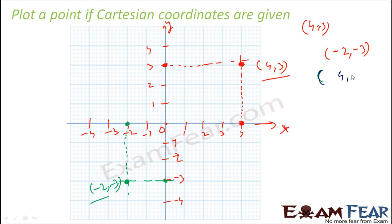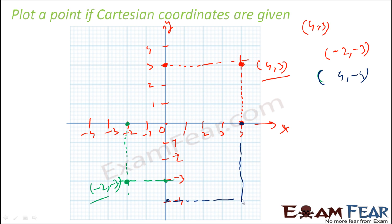Now let's plot 4 comma minus 1. We place 4 on the x-axis and minus 1 on the y-axis. Drawing the perpendicular lines, they meet at this point — which is 4 comma minus 1. It's easy.